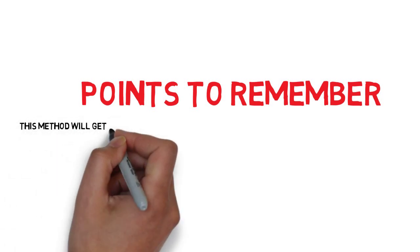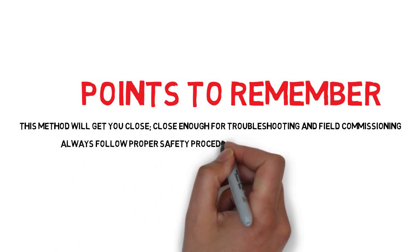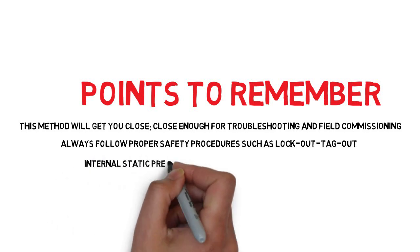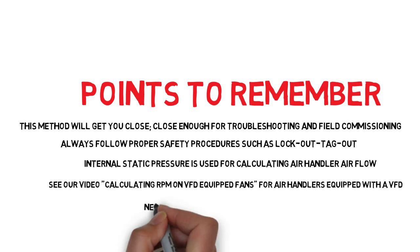Points to remember, this method will get you close, close enough for troubleshooting and field commissioning. Always follow proper safety protocol, i.e. lockout tagout. Always use internal static pressure for air handlers. Rooftops use external. And if you have a VFD, see our video on calculating RPM on VFD-equipped units. And, last but not least, never exceed the blower's maximum RPM. Bad things will happen.